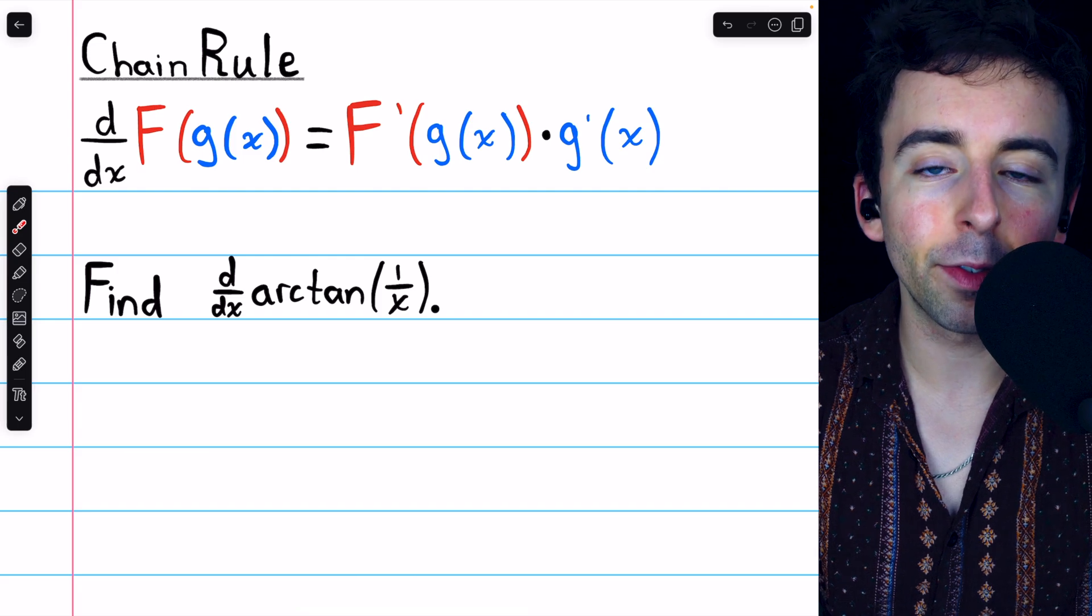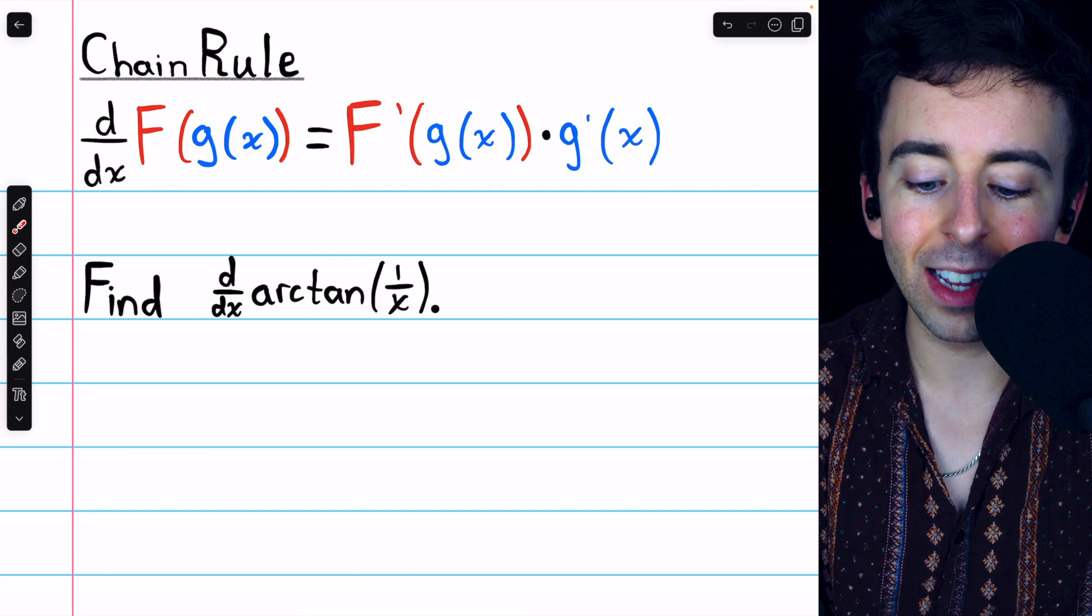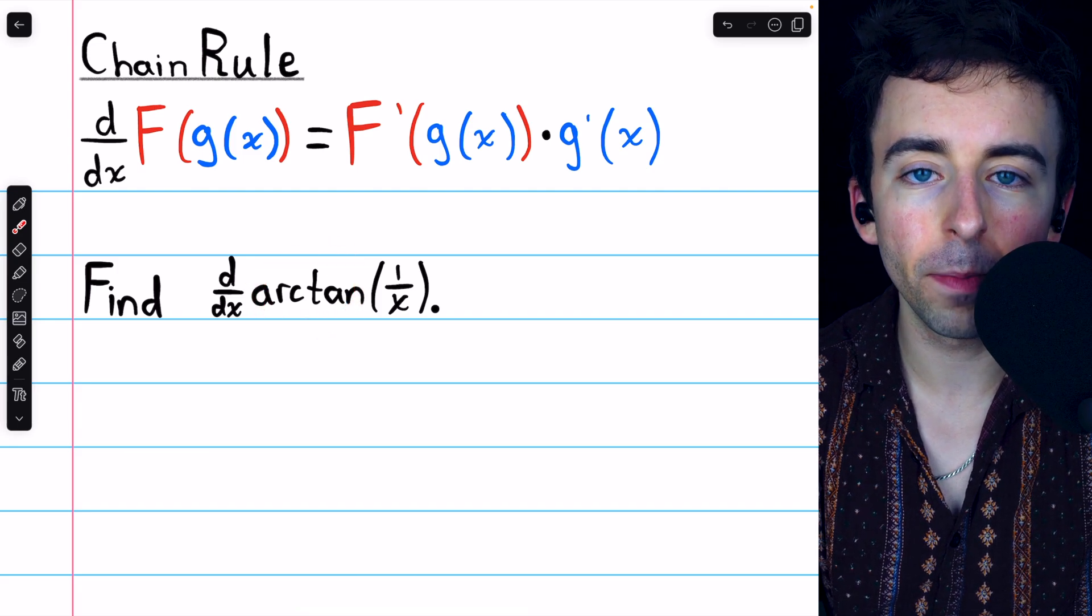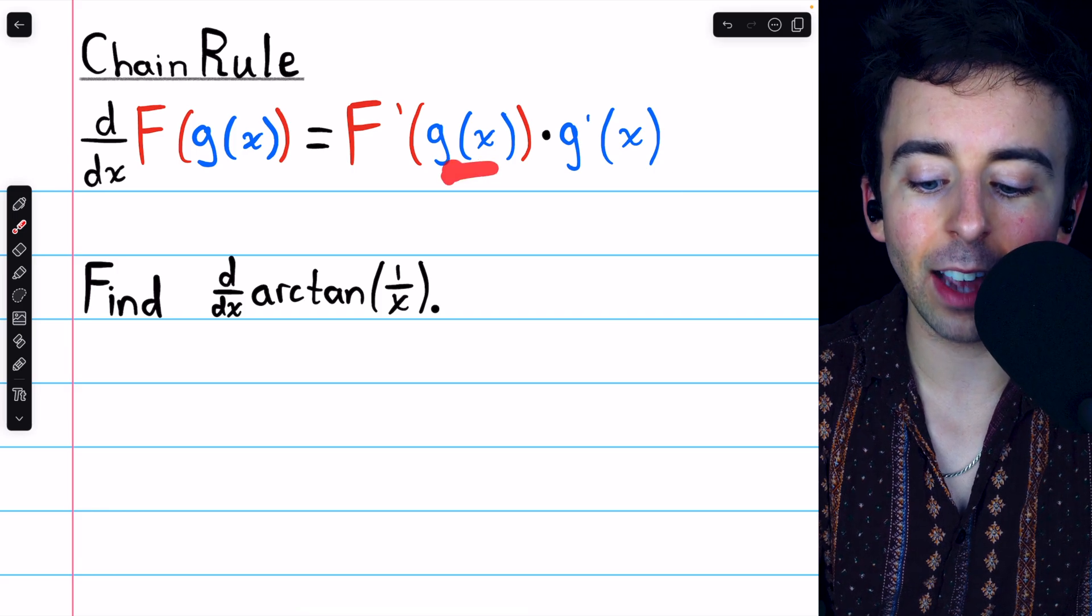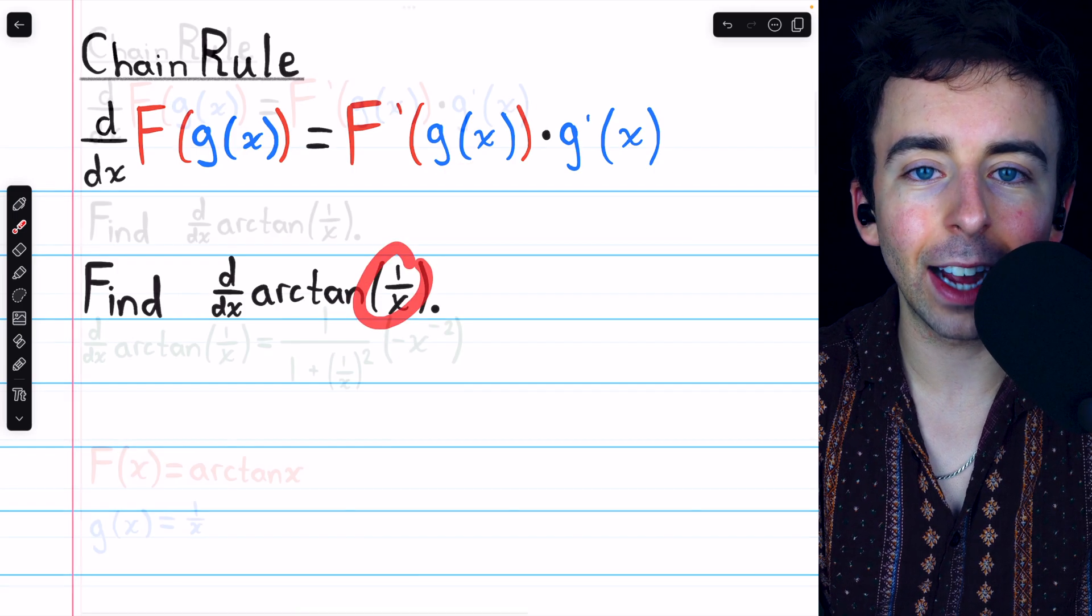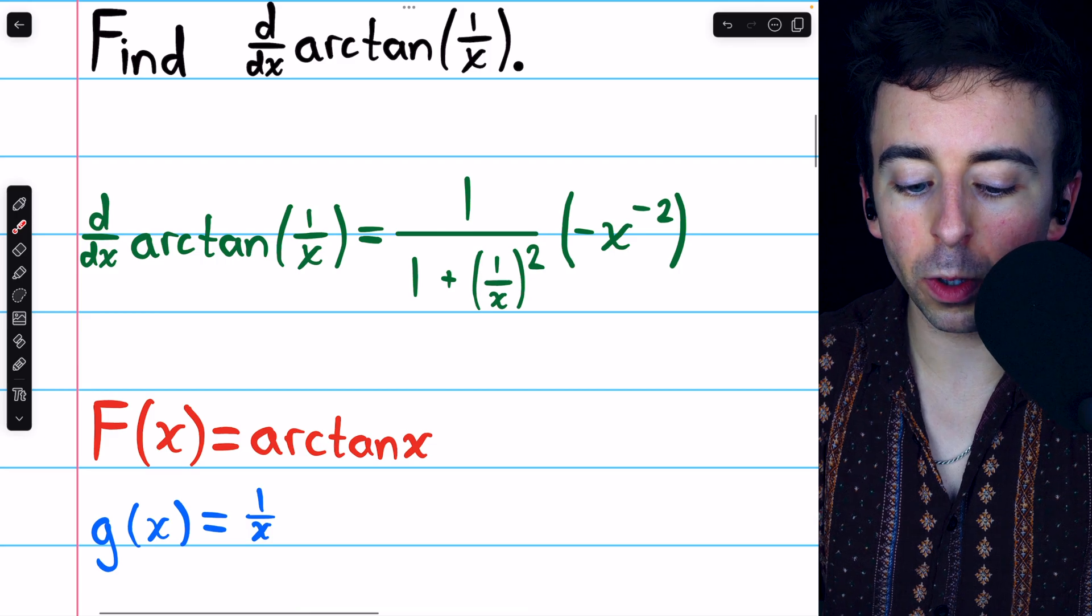In this case, f, our outside function, is the arctan function, and g, our inside function, is 1 over x. With that in mind, we begin applying the chain rule.